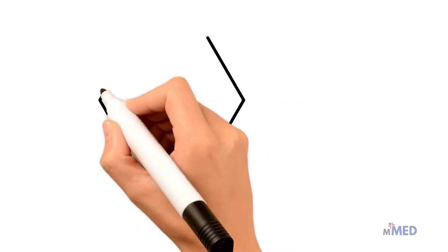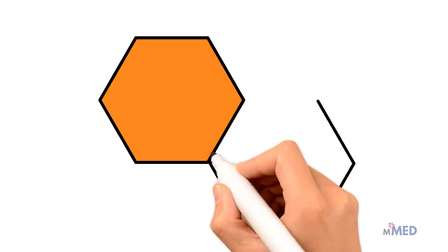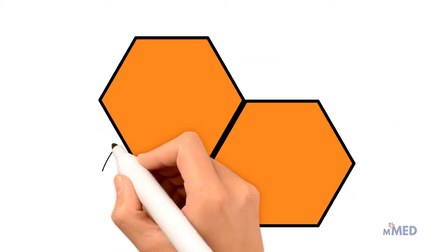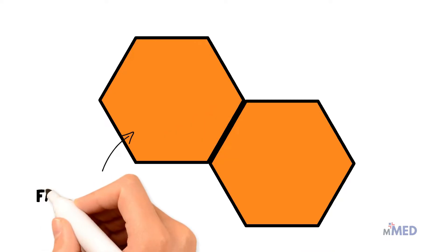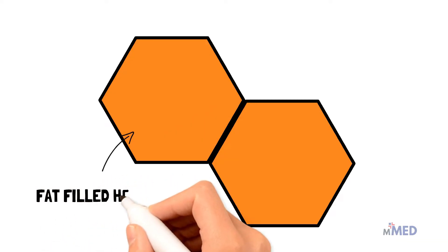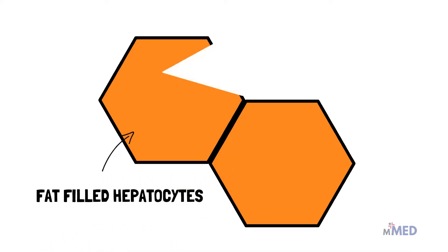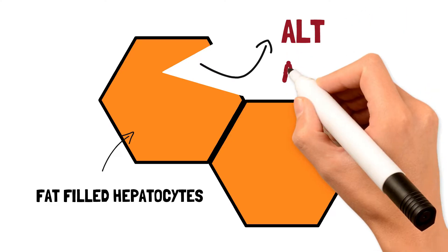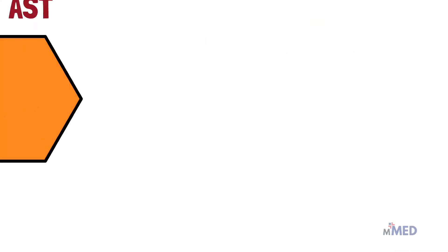This is a huge problem, as the fat-filled hepatocytes, or liver cells, burst and release their enzymes into the bloodstream. That's why we see elevated levels of enzymes in the bloodstream like ALT and AST.